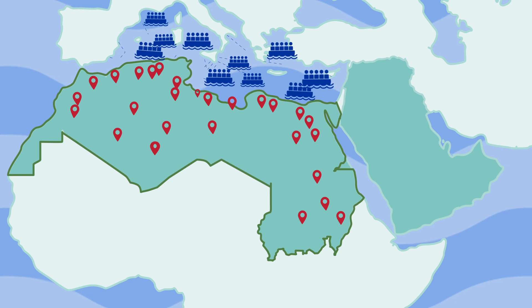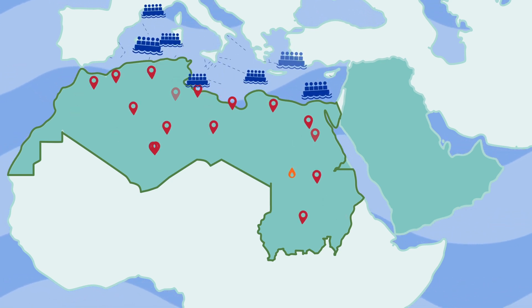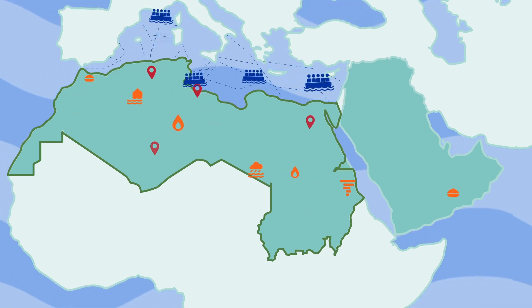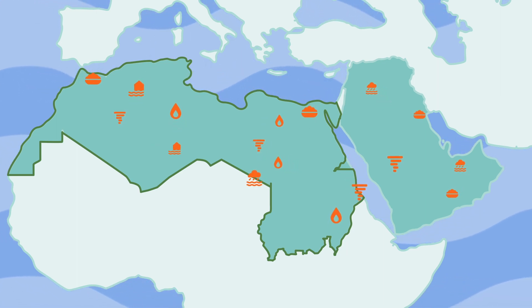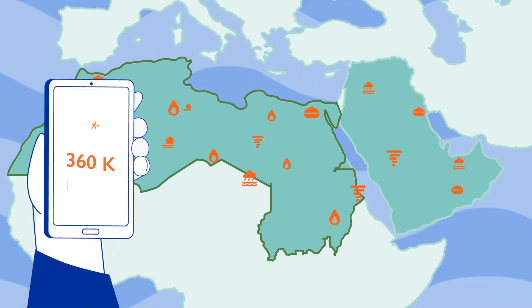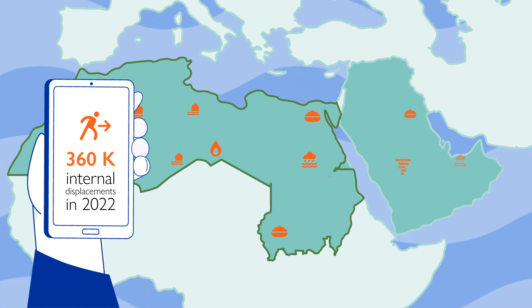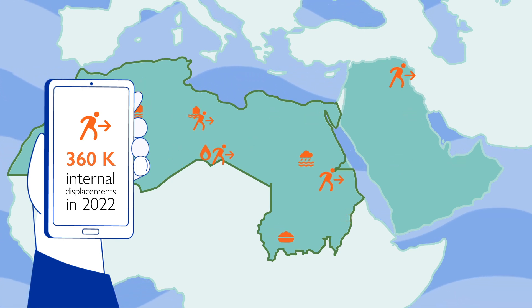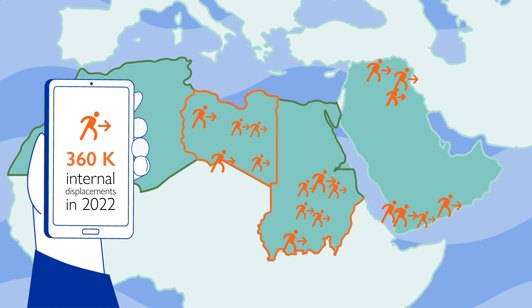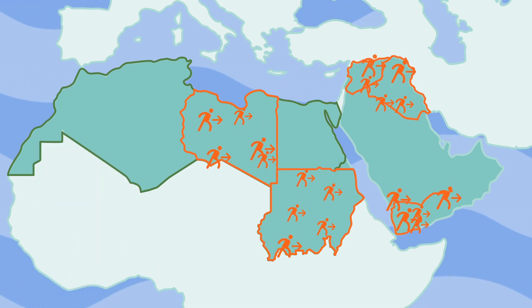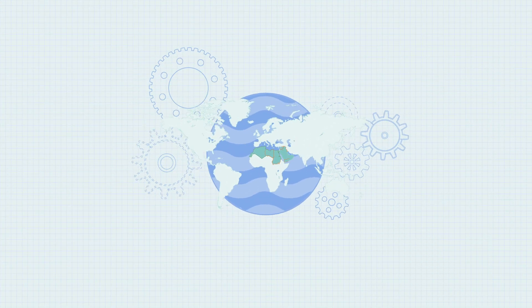North Africa faces challenges with rising sea arrivals and is not merely a transit point, but a chosen destination. These issues are compounded by the climate crisis and food insecurity, causing more than 360,000 internal displacements in 2022, disproportionately affecting Libya, Sudan, Syria, Iraq, and Yemen.